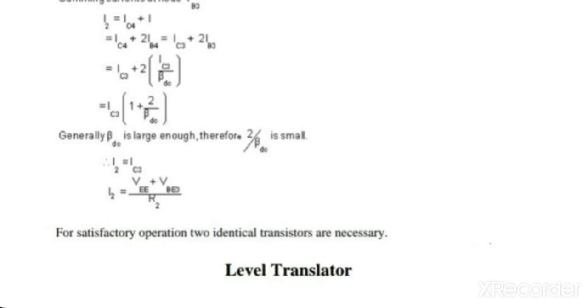I2 depends on resistance R2, and R2 can be chosen to set a desired value of collector current. For satisfactory operation of the circuit it is necessary that two transistors should be identical.